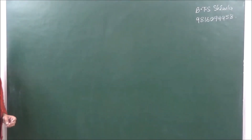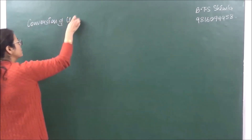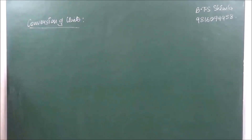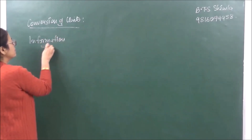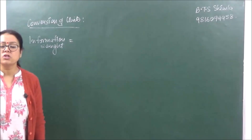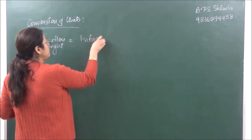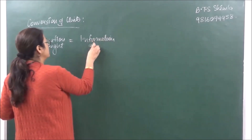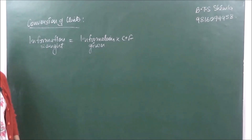So today we are going to do calculations — the way we carry out conversion of units. Basically, whenever we have some information and we need to do any conversion, the information required is: Information sought = Information given × Conversion factor. So let me tell you how to calculate the conversion factor.